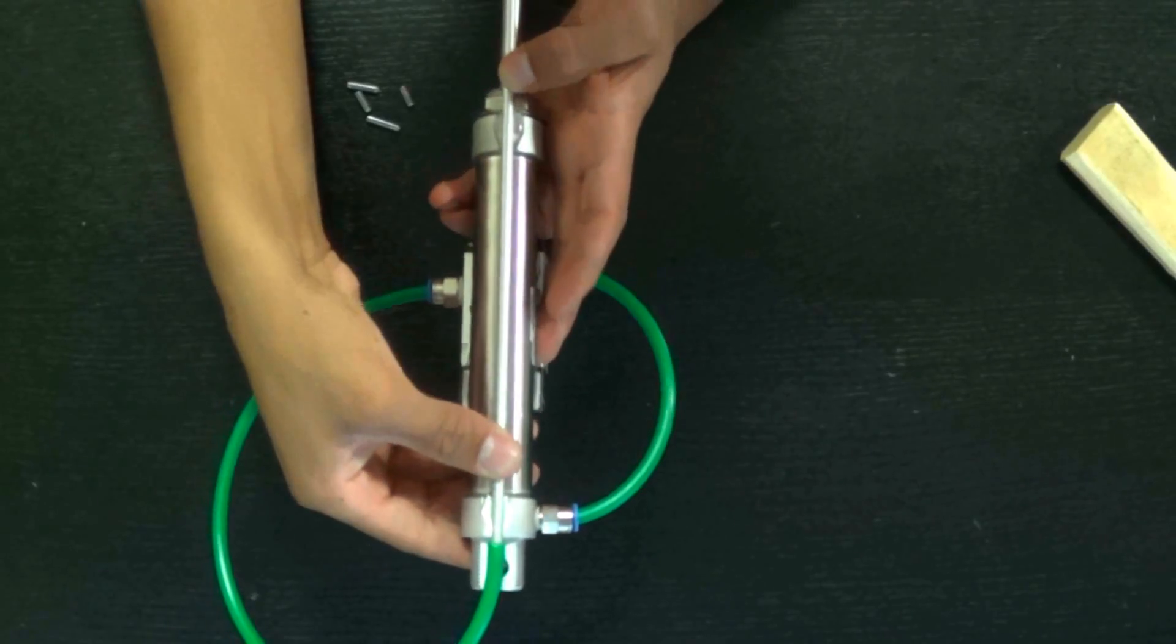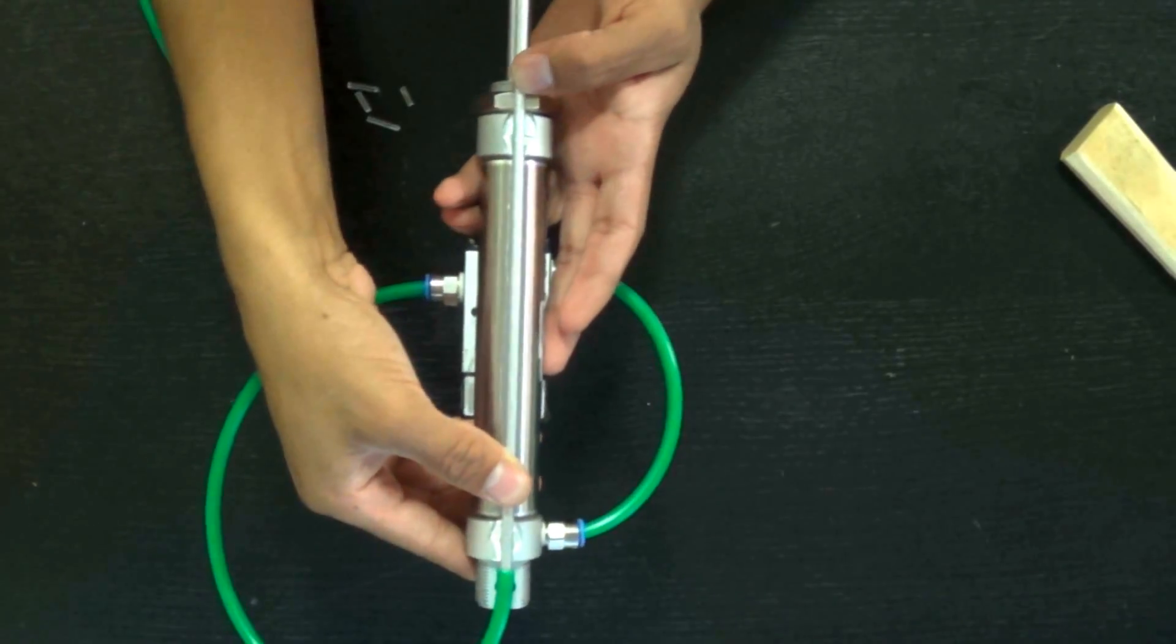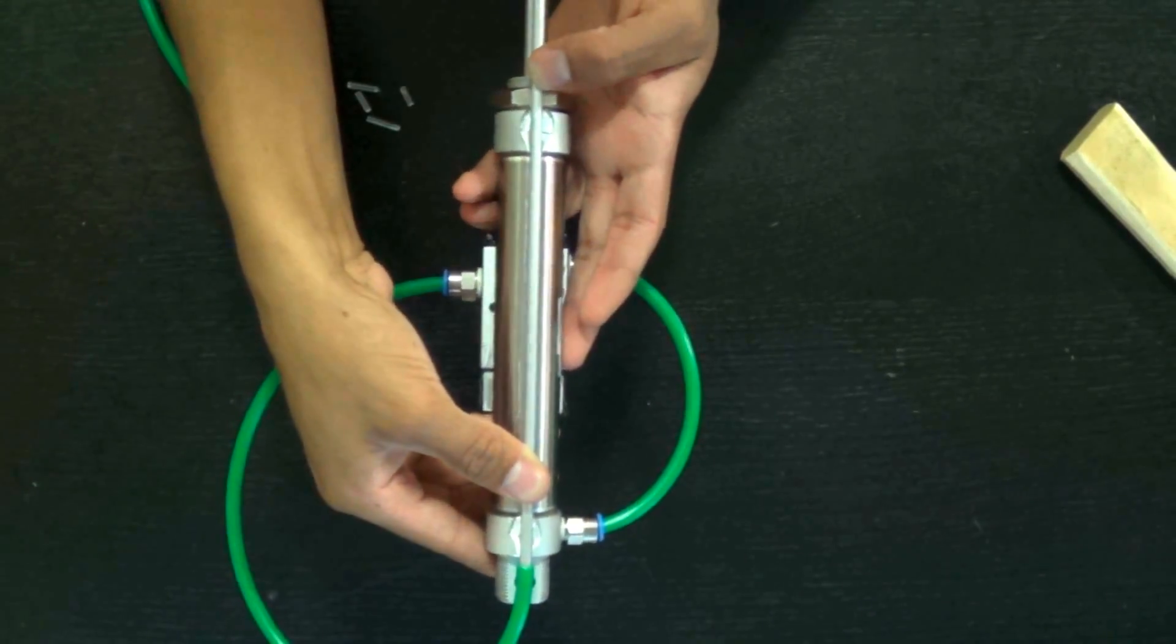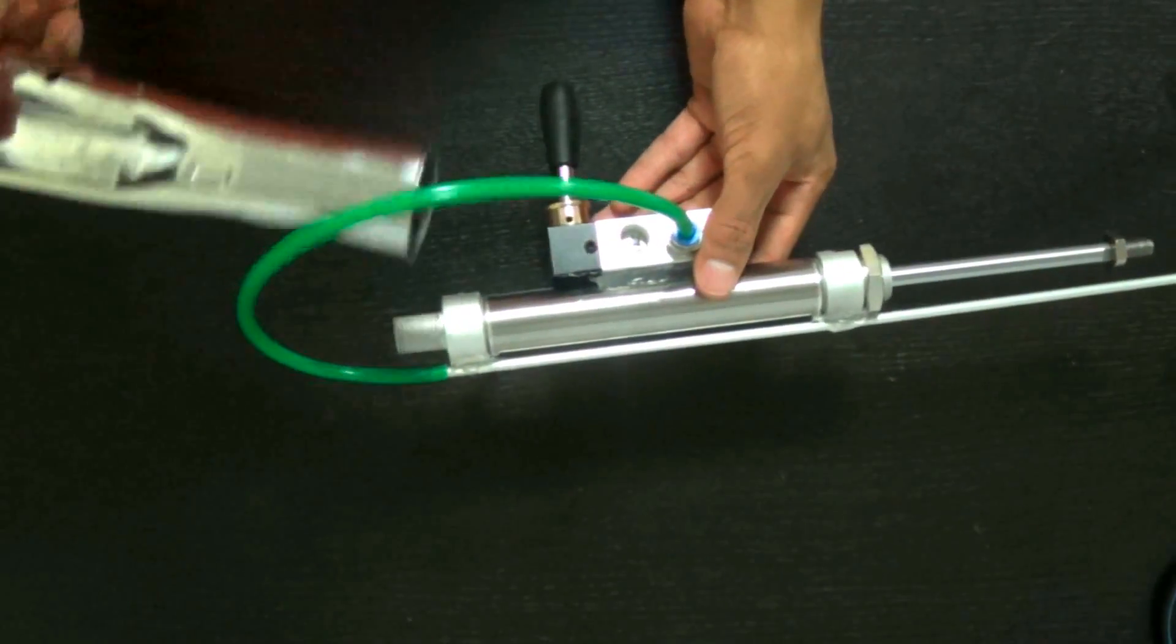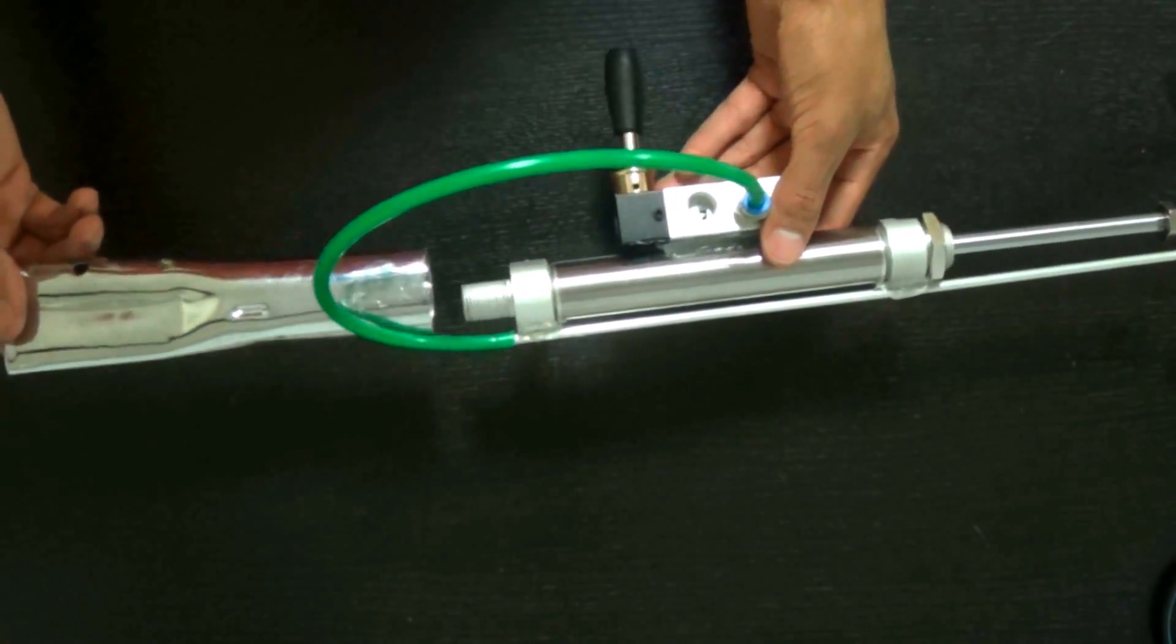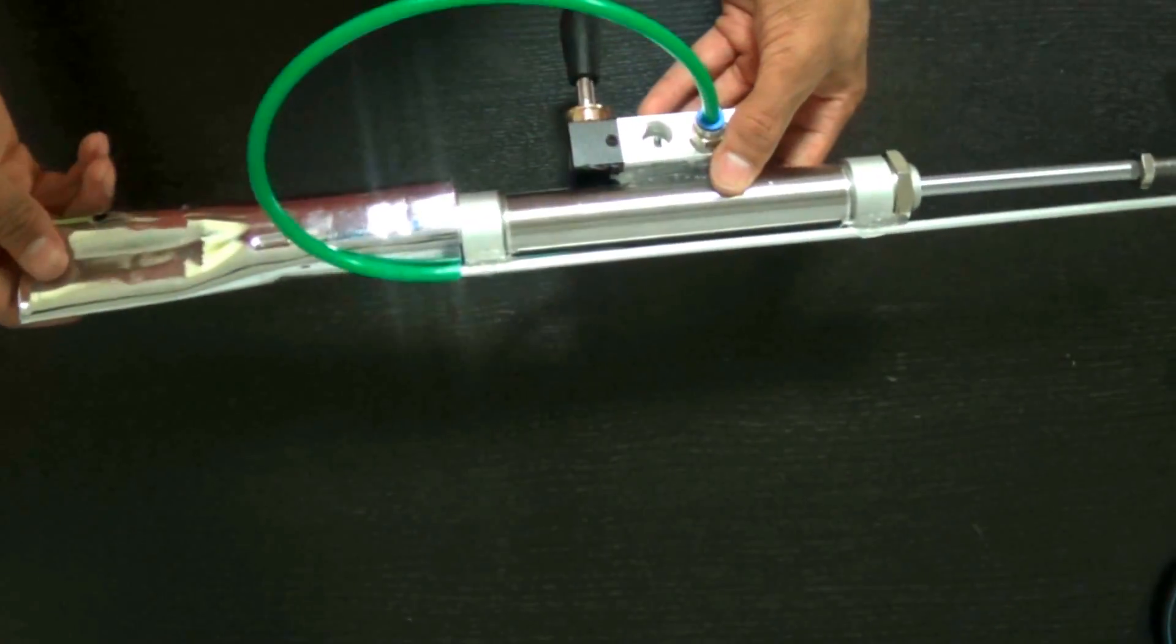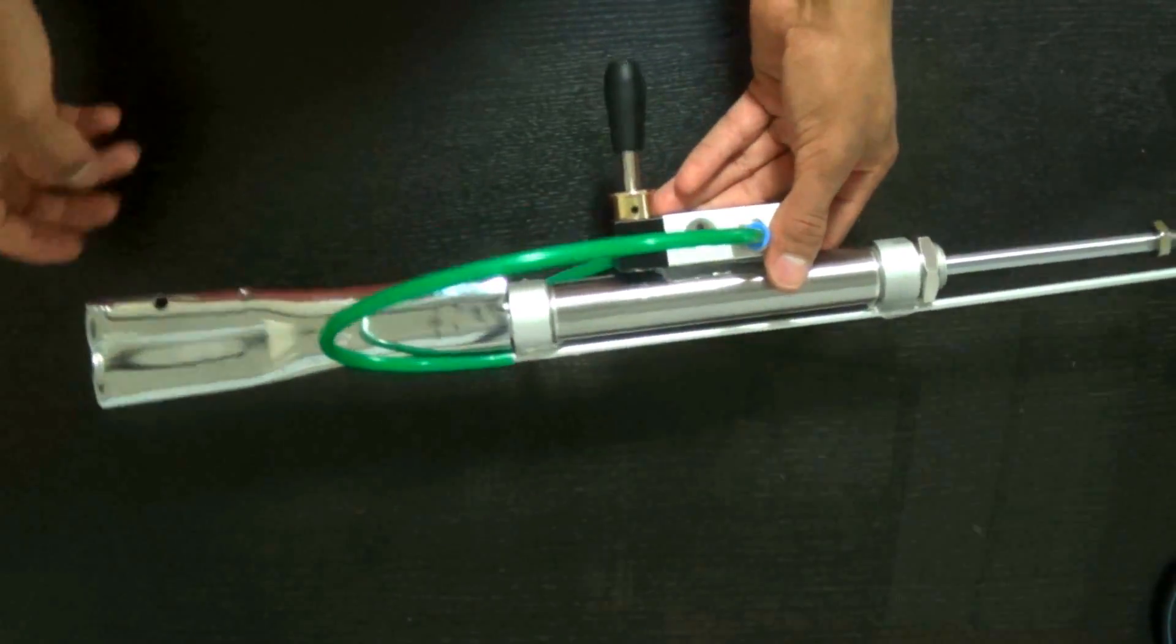So I just glue that in, hold it in place, and let it set. And then the last thing I do is I just bang a piece of metal. I found a piece of metal that was a cylinder. I banged it up into a nice shape and put it on the back of the gun.